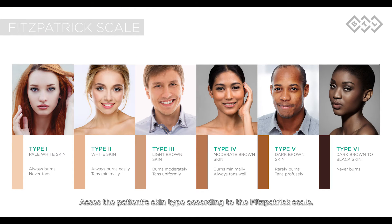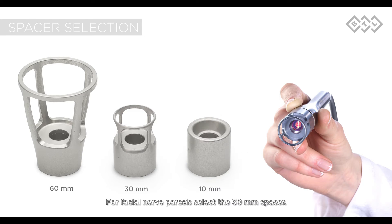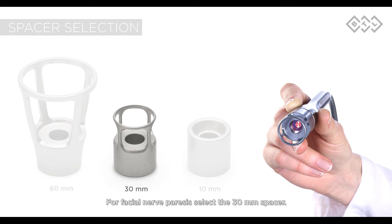Assess the patient's skin type according to the Fitzpatrick scale. For types 4 to 6, see the general guide. For facial nerve paresis, select the 30 mm spacer.